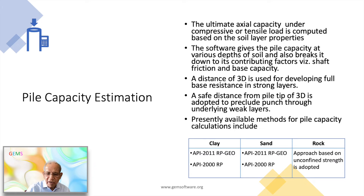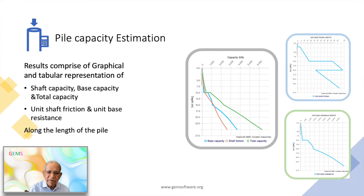In rock, the unit shaft friction Tmax is estimated by the relationship Tmax equal to alpha times the square root of unconfined compressive strength. Base resistance Q is estimated using a bearing capacity factor Nq. For the rock layer, values of unconfined compressive strength, alpha factor, and base resistance factor need to be provided. The results are presented in the form of shaft capacity, base capacity, and total capacity curves along the pile length. These curves help in choosing the penetration depth of piles at the location. Different pile diameters can also be evaluated, and unit shaft friction and base resistance curves are presented along the pile length.